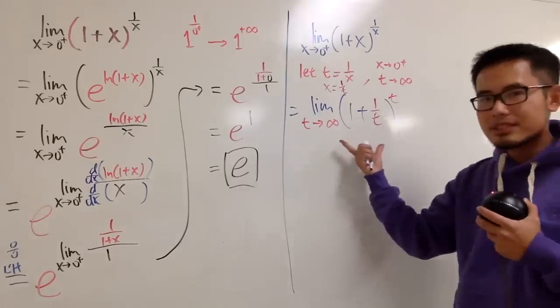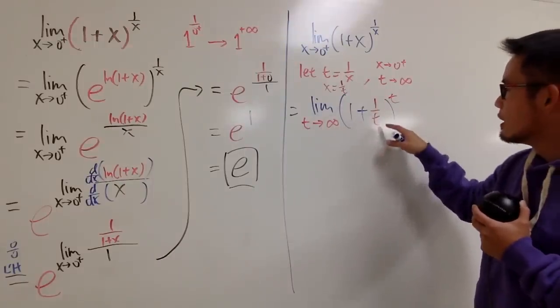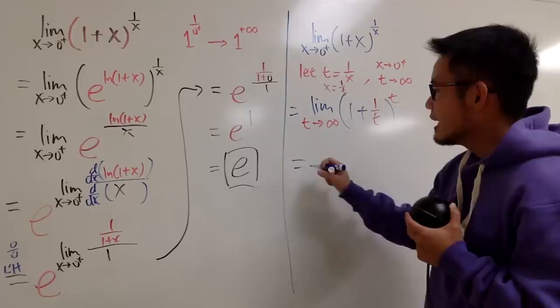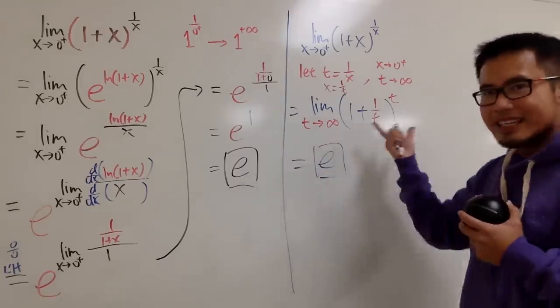Do you recognize this limit? The limit as t goes to infinity, parentheses, 1 plus 1 over t raised to the t's power. This right here is precisely the definition of the number e. Right? This is it.